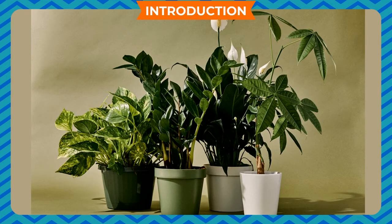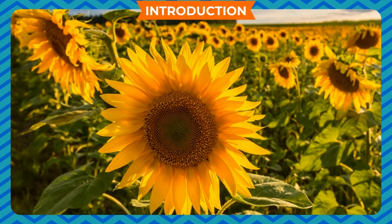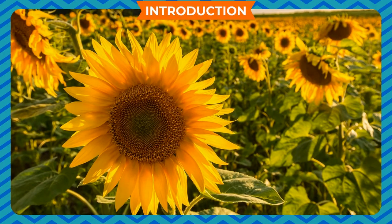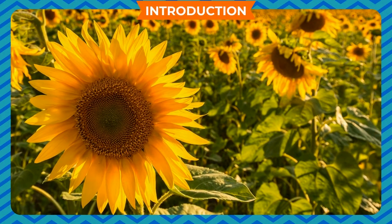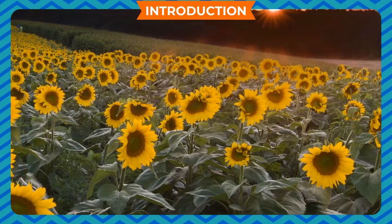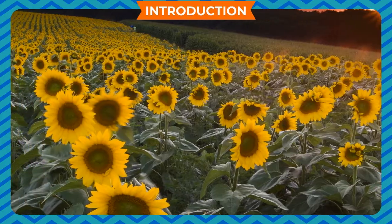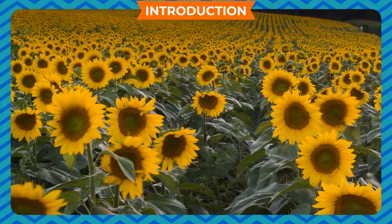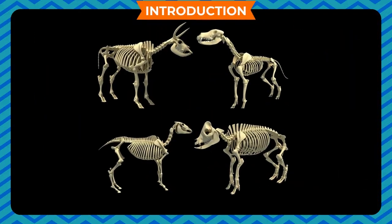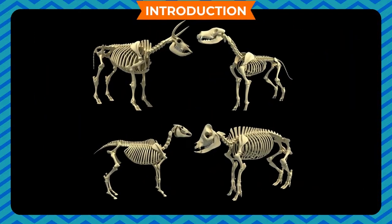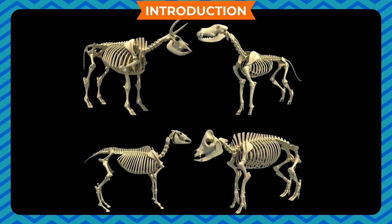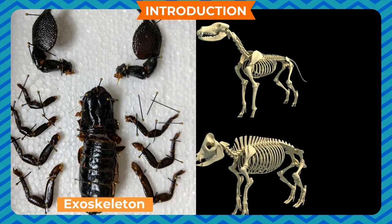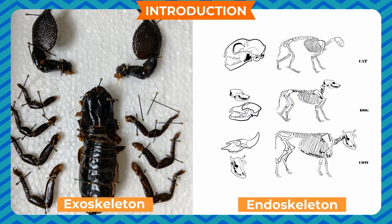Plants also move, but their movement is different from animals. An example of movement in plants is the bending of a sunflower towards sunlight. Plants cannot change the position of their body as a whole. Thus, they can only perform movements but cannot locomote. There are two main types of skeletons in animals: exoskeleton and endoskeleton.